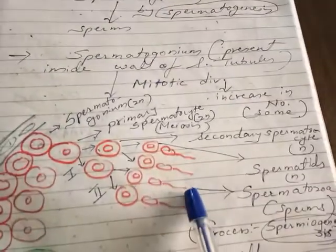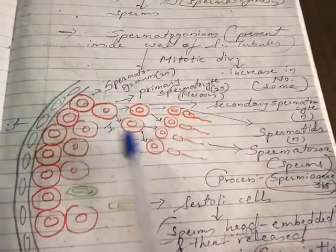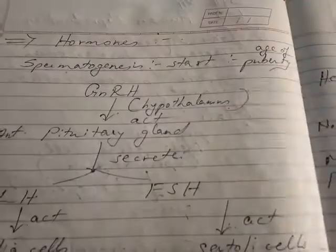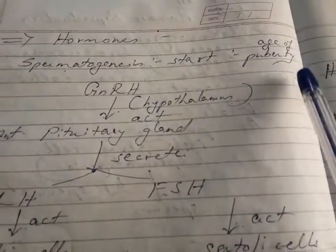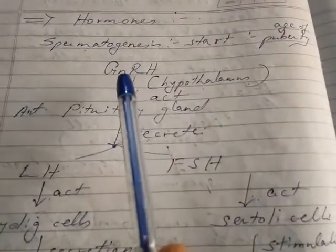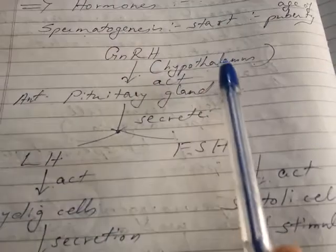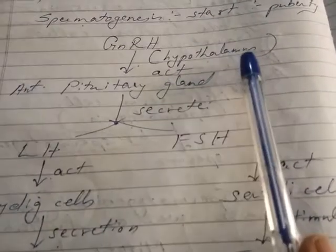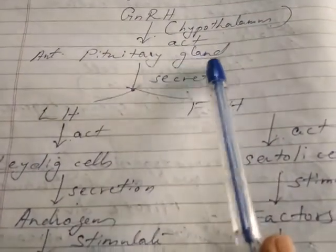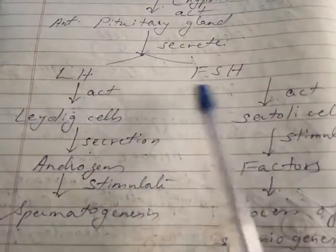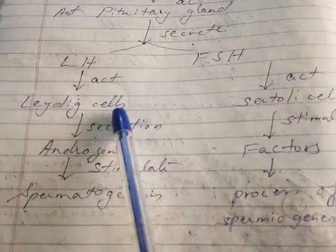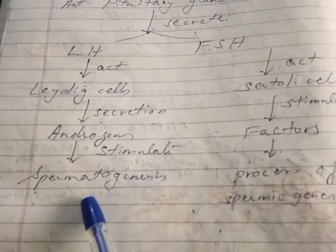This is how sperms are produced inside the testes. Now let us see the hormones involved. Spermatogenesis starts at puberty under the influence of gonadotropin-releasing hormone (GnRH) secreted from the hypothalamus. GnRH acts on the anterior pituitary gland, which secretes luteinizing hormone (LH) and follicle stimulating hormone (FSH). LH acts on Leydig cells and stimulates secretion of androgen, which stimulates the process of spermatogenesis.